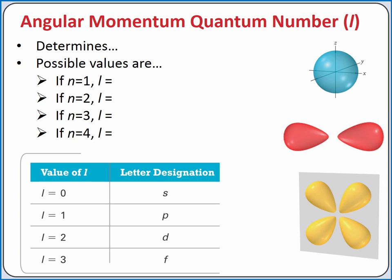The angular momentum quantum number, L, determines the shape of an orbital. The possible values are integers from 0 to n minus 1. So if n equals 1, the only possible value of L is 0. If n equals 2, the possible values are 0 or 1. If n equals 3, the possible values are 0, 1, or 2.